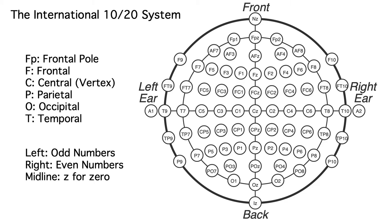We use odd numbers for the left hemisphere, even numbers for the right hemisphere, and a Z to indicate zero for the midline. The numbers get larger as we move farther away from the midline.